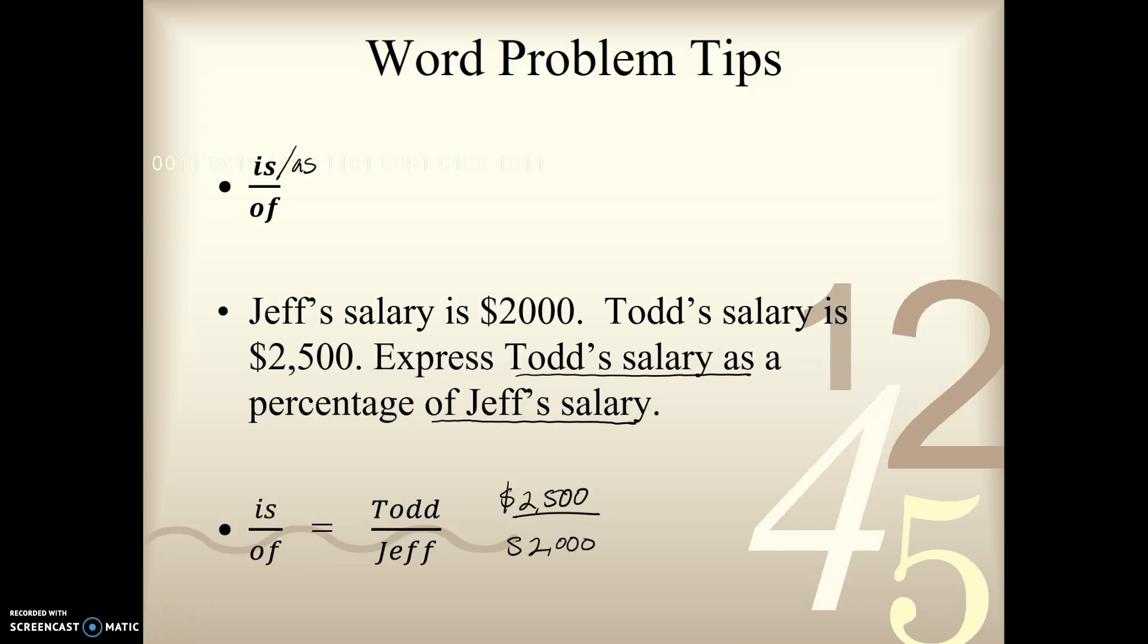So from here, all we're going to do is convert this fraction to a percent, because it tells us right here that we want to express that as a percentage. So let's cross-cancel first of all, and just get a number that's a little easier to work with. So now I have 25 over 20, and I'm going to use method 1 and multiply that by 5 over 5 to get a denominator of 100. So I get 125 over 100, and that means that Todd's salary as a percentage of Jeff's salary is 125%, or Todd's salary is 125% of Jeff's salary.